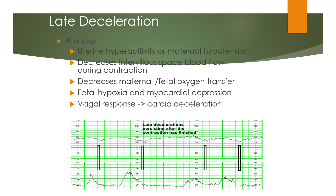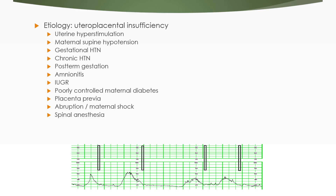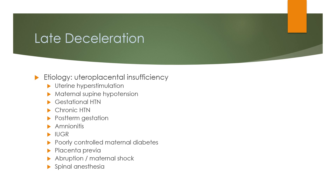Pathophysiology of late deceleration involves uterine hyperactivity or maternal hypotension, decreased intervillous space blood flow during contraction, decreased maternal-fetal oxygen transfer, fetal hypoxia and myocardial depression, and vagal response causing cardiac deceleration. Etiology includes uterine hyperstimulation, maternal supine hypotension, gestational hypertension, chronic hypertension, post-term gestation, amnionitis, IUGR, poorly controlled maternal diabetes, placenta previa, abruption, maternal shock, and spinal anesthesia.